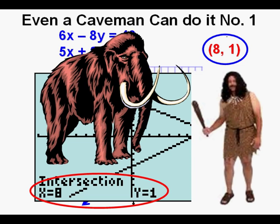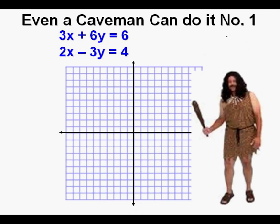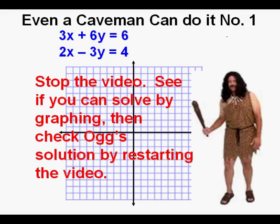Let's give Og one more system to solve: 3x plus 6y equals 6 and 2x minus 3y equals 4. Stop the video and see if you can solve it by graphing, then check Og's solution by restarting the video.